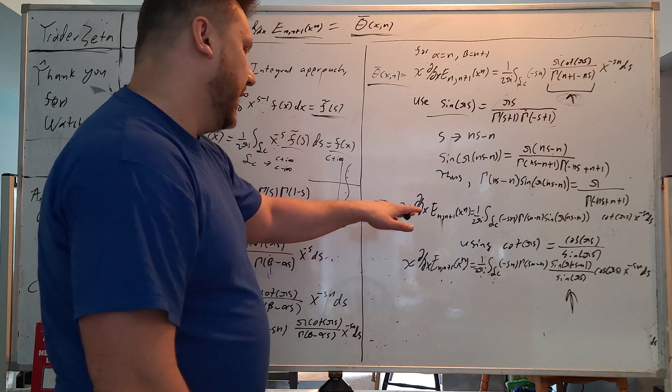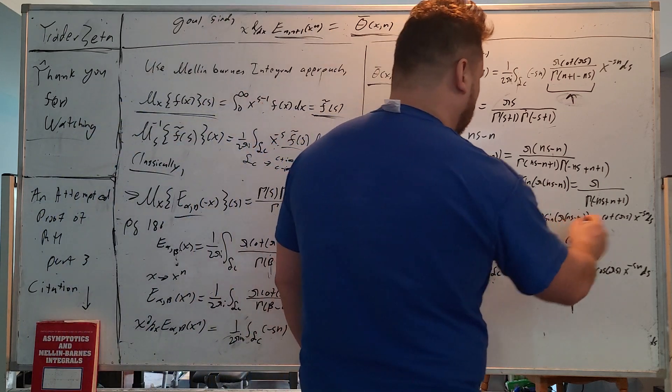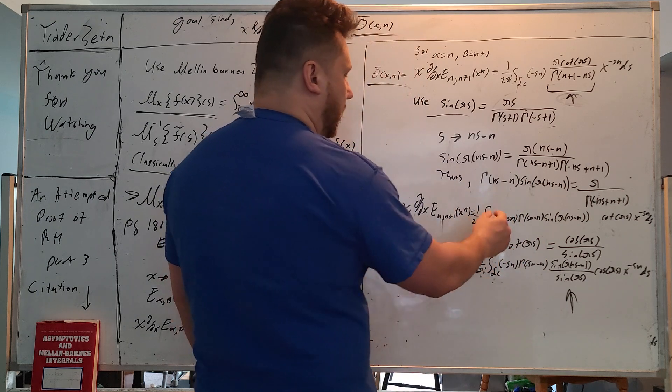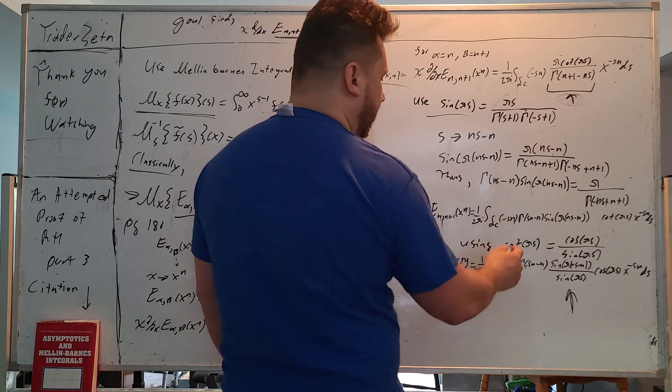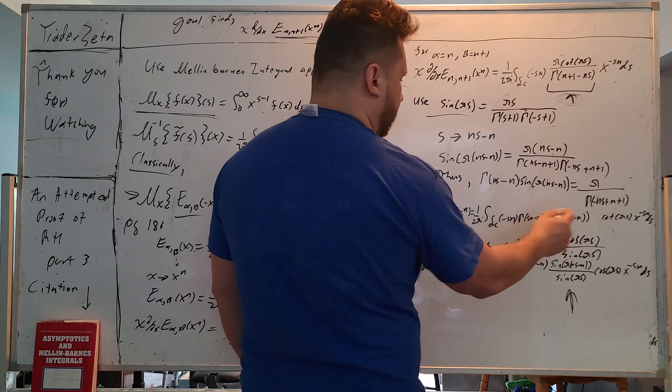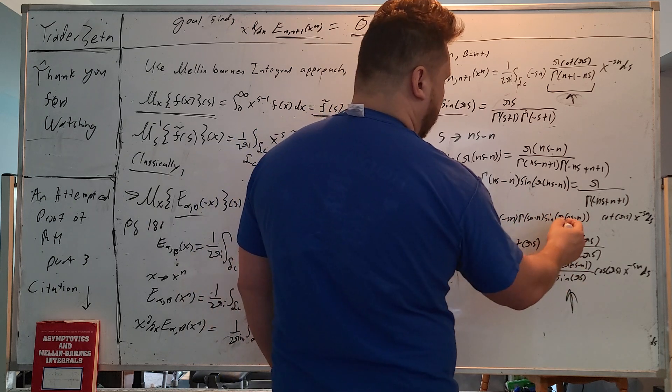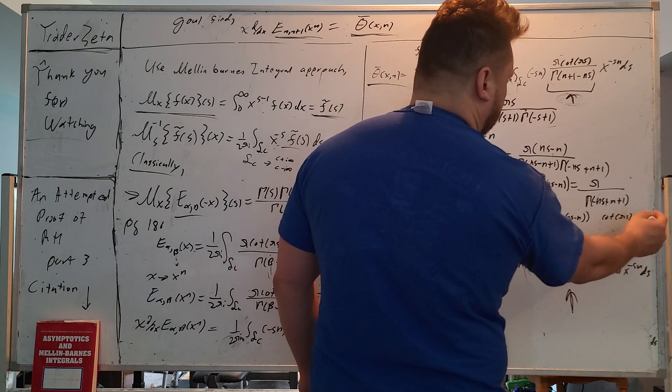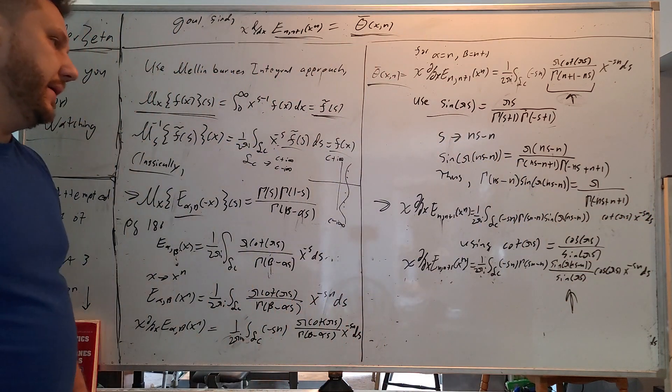So our theta bar of xn is going to be this right here: 1 divided by 2 pi i, complex line integral, negative sn, gamma sn minus n, sine pi ns minus n, cotangent pi s, x to the negative s ds.